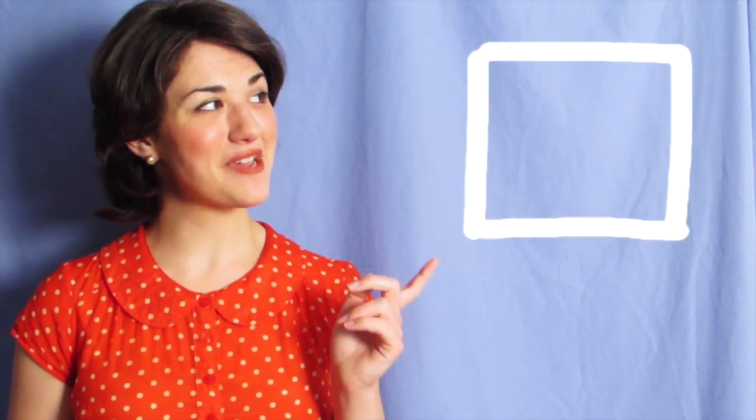Let's take a look at this shape. It has one, two, three, four sides and they're all the same length. So that means it's a square.